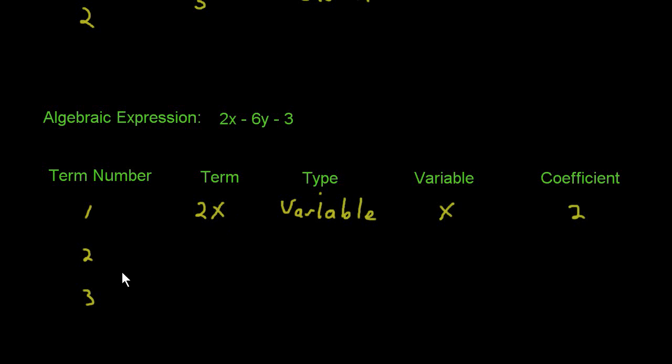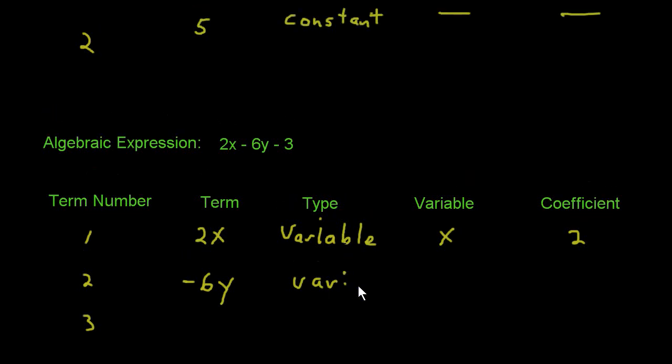The second term is negative 6Y. And it is also a variable type. It has the variable Y in it. So the variable Y and the coefficient is the number negative 6, which is multiplied times the Y.